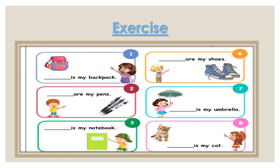What are the answers? Number one: 'That is my backpack' — one item, far. 'Those are my shoes' — many, far. 'Those are my pants' — many pants and they are far. 'This is my umbrella' — because the girl is holding the umbrella, one item, near. 'This is my notebook' — the boy can hold the notebook, one item, near. The last one: 'That is my cat' — one item, far, because the girl can't touch the cat.